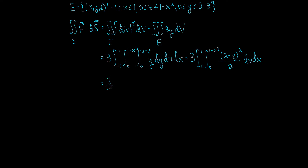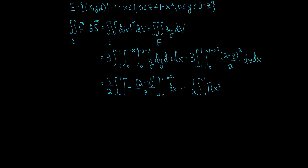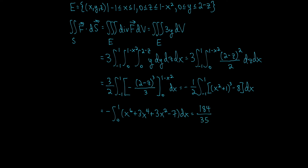That becomes (3/2) times the integral from −1 to 1 of [−(2 − z)³/3] evaluated from 0 to 1 − x² dx, which simplifies to −(1/2) times the integral from −1 to 1 of (x² + 1)³ − 8 dx. Simplifying further, we get the integral from 0 to 1 of x⁶ + 3x⁴ + 3x² − 7, which evaluates to 184/35 — just polynomial antiderivatives, so not much work.